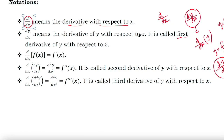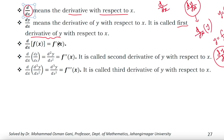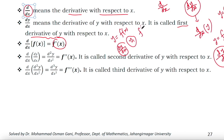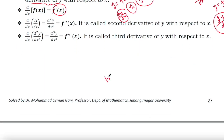dy/dx is called the first derivative of y with respect to x. If y = f(x), then the first derivative is denoted by dy/dx, or y' (y-prime), or f'(x). These are the notations for the first derivative, also called the first differential coefficient.